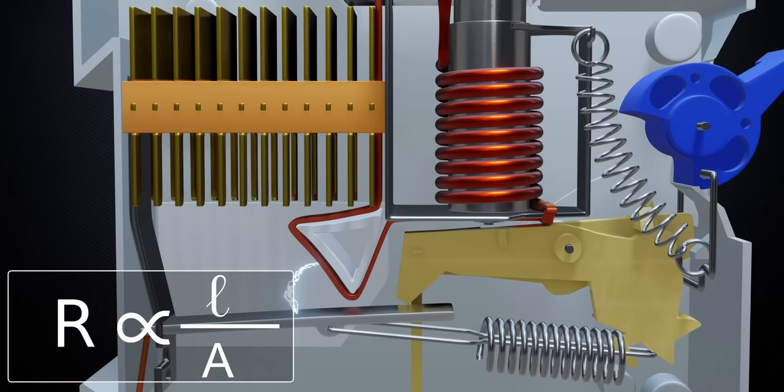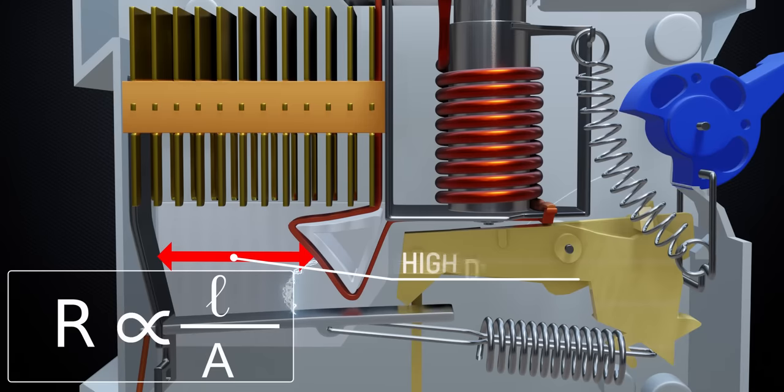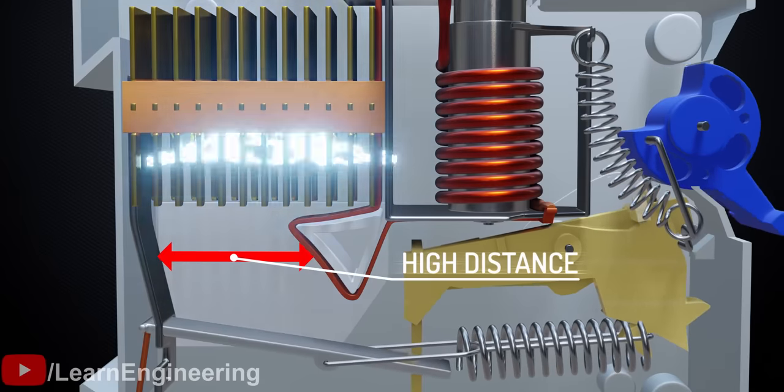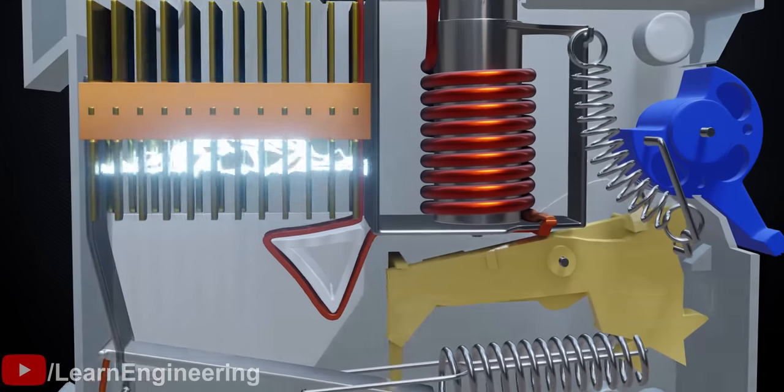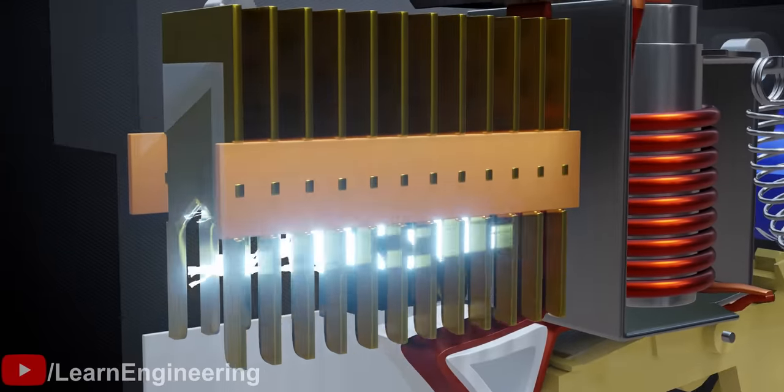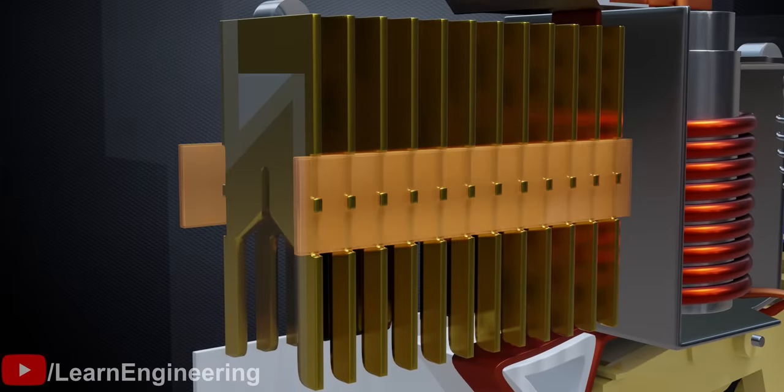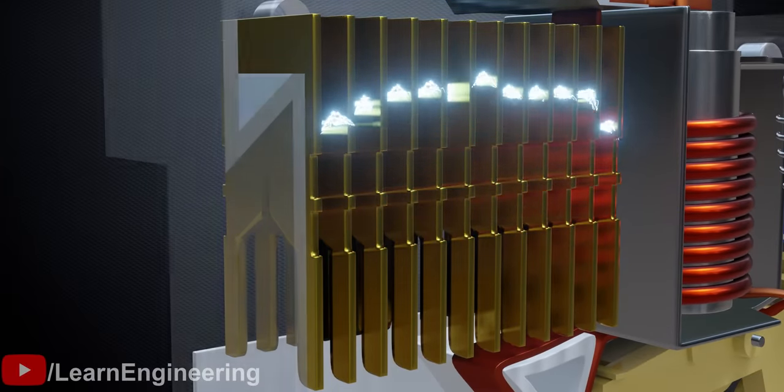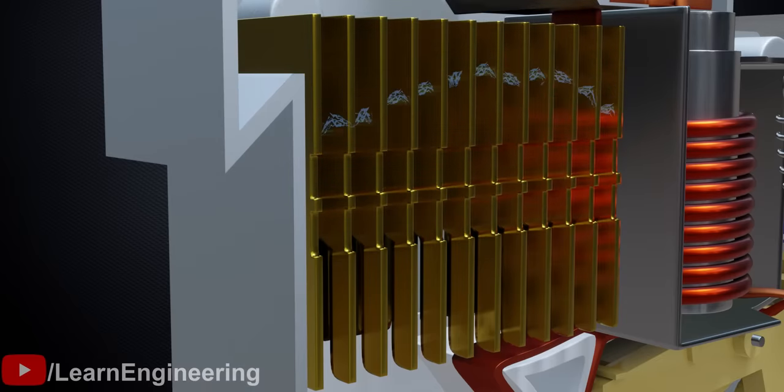Resistance increases with length and decreases with area. Here, we need increased resistance of the current which passes through air, which is why the distance between the contact points is kept high after the circuit opens. Since the air is hot, this arc will be pushed up. Later, the arc is divided into small chunks, thus reducing its area. With increased resistance, the arc dies away at current zero.